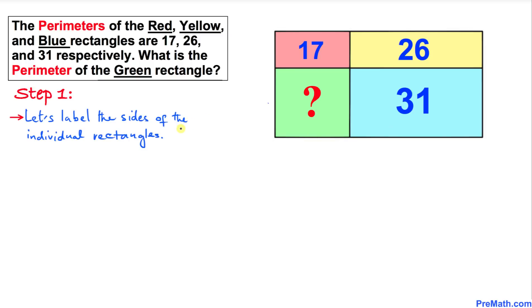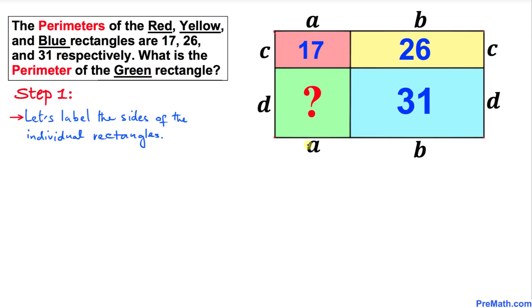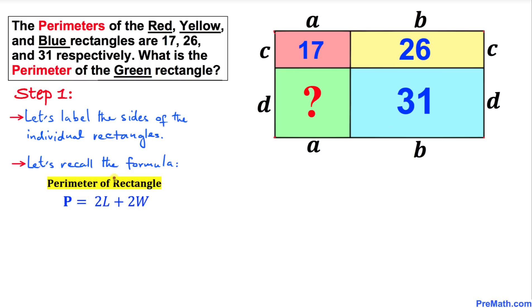Here's our very first step: let's label the side lengths of these individual rectangles. I'm going to call this side a, this side b, this side c, and this side d. Then obviously this side is going to be a again, this is b, this is c, and this is d. Here's our much nicer looking diagram.